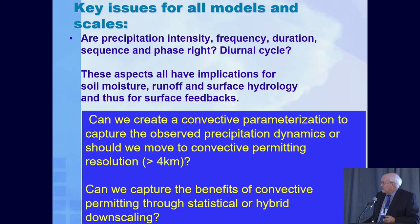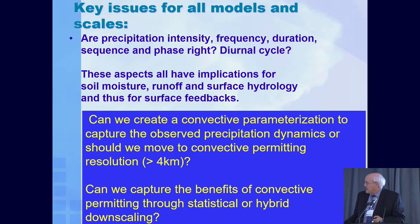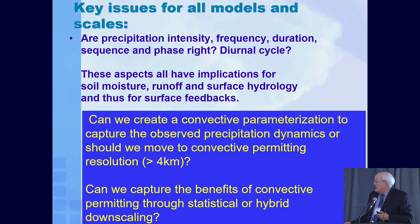We're also looking at convective permitting through statistical or hybrid downscaling — can we capture its benefits? We have a hybrid downscaling system where we actually solve the linear equations of motion in the atmosphere. It's not the full dynamical Navier-Stokes equation, but we can get about 90% of the benefit over complex terrain just by solving linear flow.